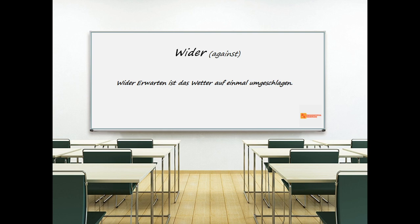'Wider' means 'against', though it is not commonly used in everyday German. It is a formal synonym of 'gegen' and is usually found with the meaning 'against' in compounds. Example: 'Wider Erwarten ist das Wetter auf einmal umgeschlagen' — against all expectations the weather suddenly changed. So 'wider' is simply replacing 'gegen'; it's not so commonly used.